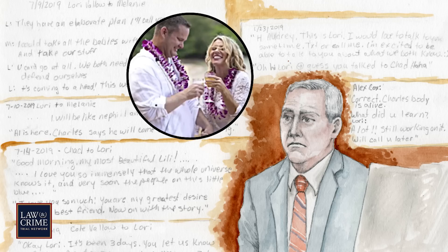Any conversations about Tammy Daybell? Yes. Was there communication suggesting those individuals were considered barriers by the defendant to her future with Chad Daybell? The exact word they used in the communications was 'obstacles.' And just to be clear, the communications between who? Chad Daybell and Lori Vallow. And they characterized J.J., Tylee, Tammy, and Charles as obstacles? Correct.